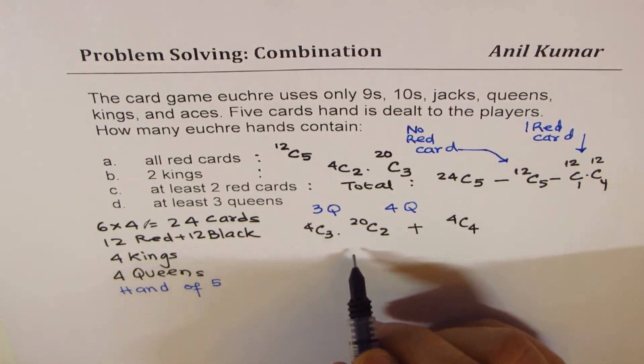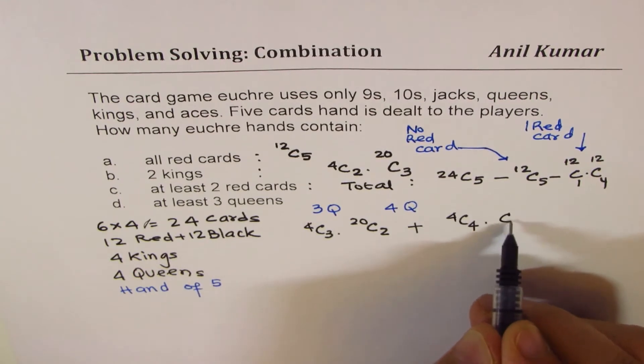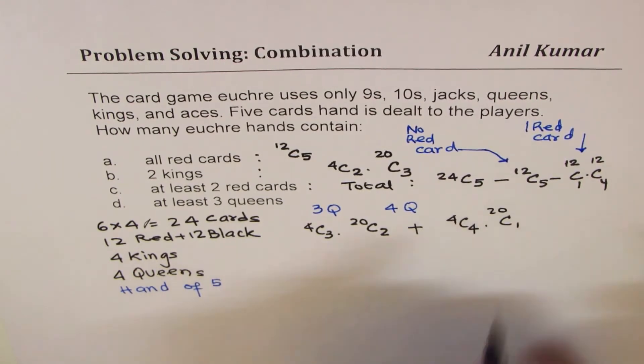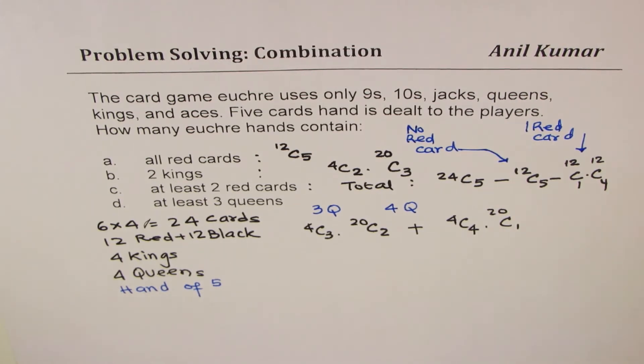So that gives us three queens. Now let's go for four queens. So 4C4, all four. And one will be from rest. So that becomes your solution for part D.